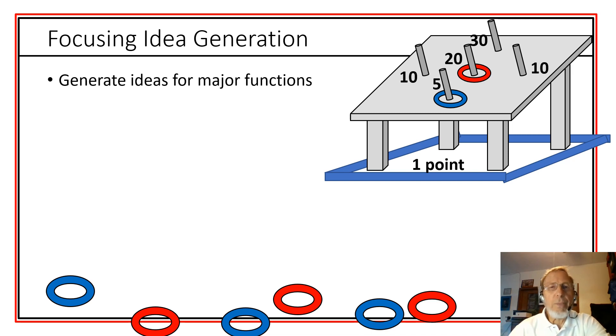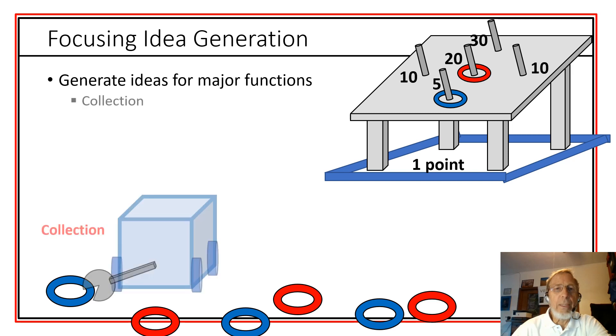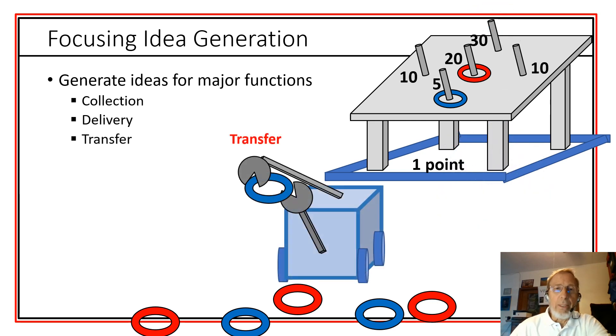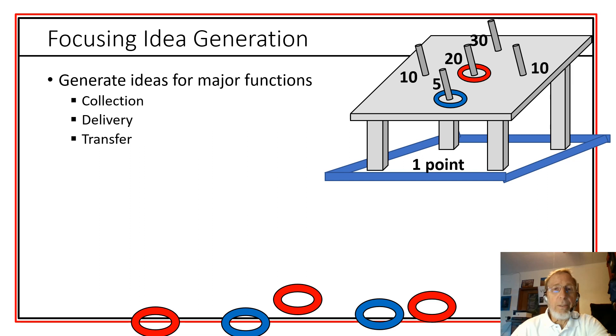When we're generating ideas, it's good to have a focus for any particular period when we're generating these ideas. So a good way to do that is to generate ideas for one major function at a time. For example, oftentimes our robot has to collect something. So generating ideas for collection systems could be one focus. Also, we often have to deliver something. Deliver a game element to a certain place. So delivery systems could be another focus for idea generation. And then sometimes we need to transfer from a collection to delivery. And that could be another focus.